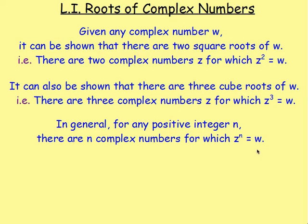In other words, there are going to be four fourth roots of W. If you worked out the fourth root of W, you would get four different answers — four complex numbers that would give you that. If you wanted to work out the fifth root of W, there are five complex numbers that when raised to the power of 5 give you W. Let's move on to look at some examples using that.